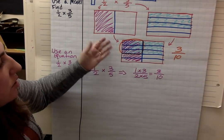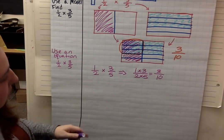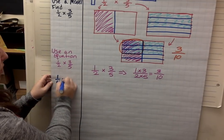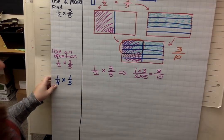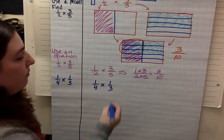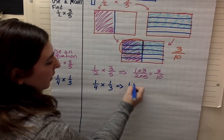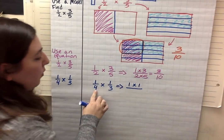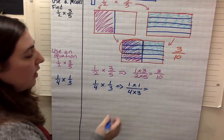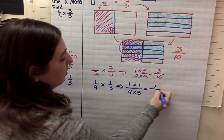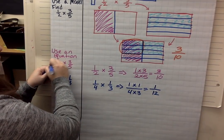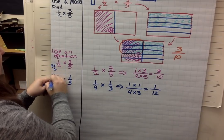I'm just using a model to show my work. Let's try one more: solve 1 fourth times 1 third. I multiply the numerators — 1 times 1 — and then multiply the denominators — 4 times 3. 1 times 1 is 1, and 4 times 3 is 12. So the answer is 1 twelfth. That was example 1 and example 2.